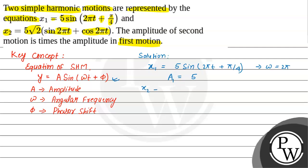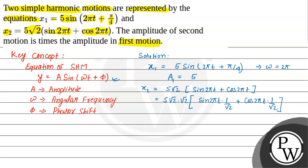Now let's look at the second equation. We are given 5√2 times (sin 2πt + cos 2πt). Here we will multiply numerator and denominator by √2, so this becomes 5√2 multiplied by √2, and then for both terms we divide by √2, giving: sin 2πt times (1/√2) plus cos 2πt times (1/√2).